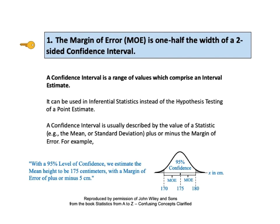The margin of error, MOE, is one half the width of a two-sided confidence interval. This is key to understanding number one. A confidence interval is a range of values which comprise an interval estimate. It can be used in inferential statistics instead of hypothesis testing of a point estimate. Here's a graph from my first two videos on confidence intervals.